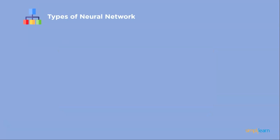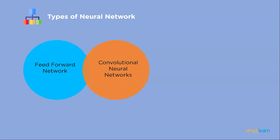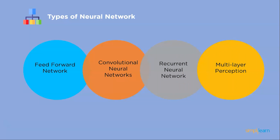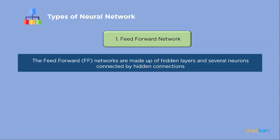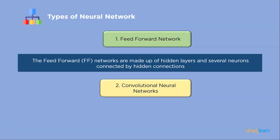Now let's understand the various types of neural networks: feed forward network, convolutional neural network, recurrent neural network, and multi-layer perceptron. Feed forward networks are made up of hidden layers and several neurons connected by hidden connections. Since data only travels in one direction with no backward propagation, these are referred to as feed forward systems.